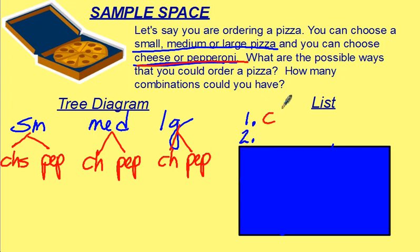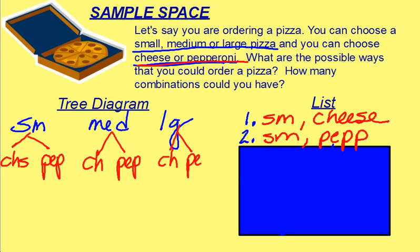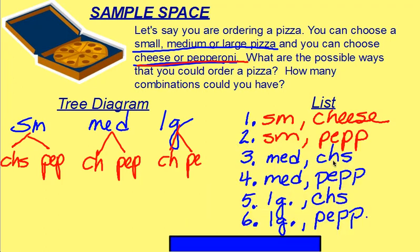So you could have a small cheese, a small pepperoni, and the same two choices for your medium — cheese or pepperoni — and a large with cheese or pepperoni. When you turn this into a list, you write your choices: small cheese, small pepperoni, medium cheese, medium pepperoni, large cheese, large pepperoni. You should have six combinations: 1, 2, 3, 4, 5, 6.